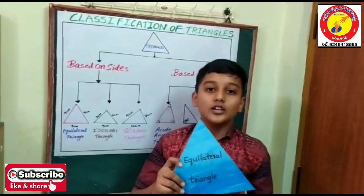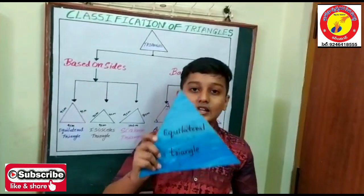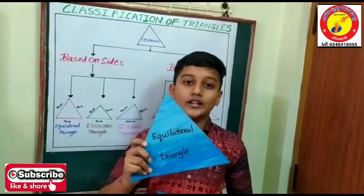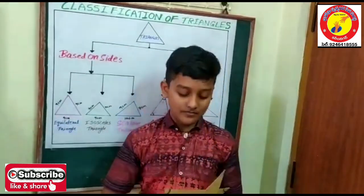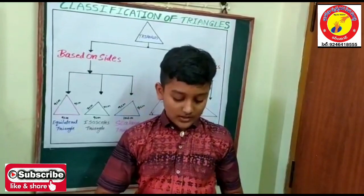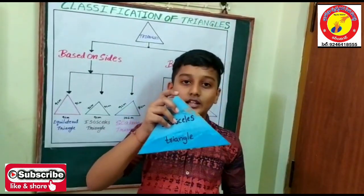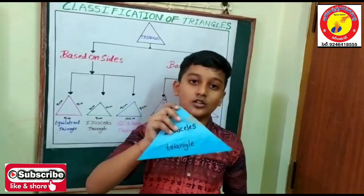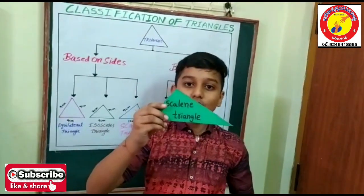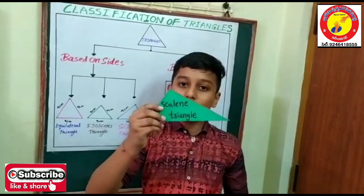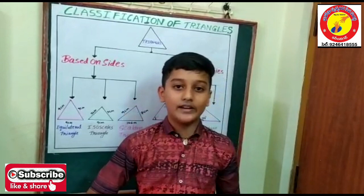Equilateral triangle — if all three sides of a triangle are equal, then it is called an equilateral triangle. If two sides are equal, then it is called an isosceles triangle. If all three sides are of different lengths, it is called a scalene triangle.